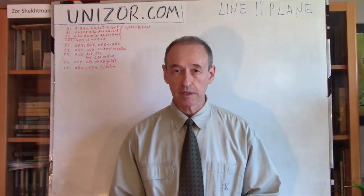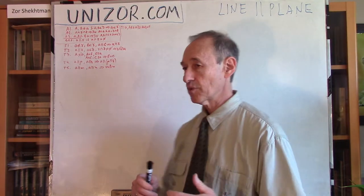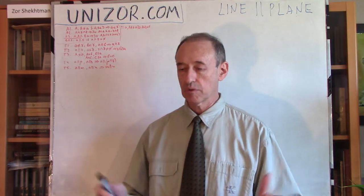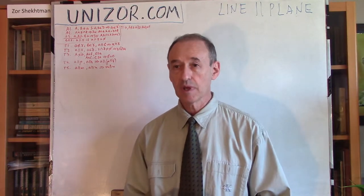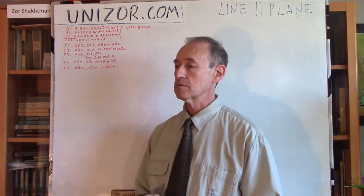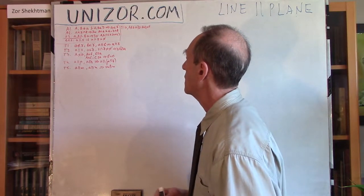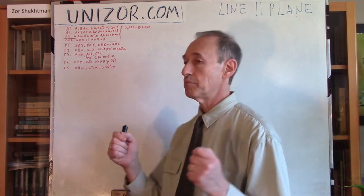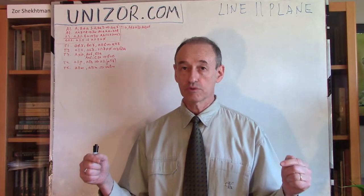Today we are talking about parallelism between lines and planes. Let me briefly remind you the main axioms. There are many axioms — Hilbert was the one who put a set of around 20-something axioms into geometry, which definitely encompass Euclid's postulates.